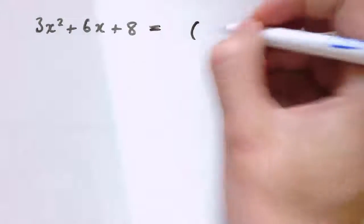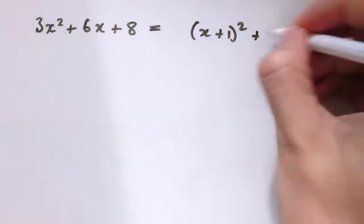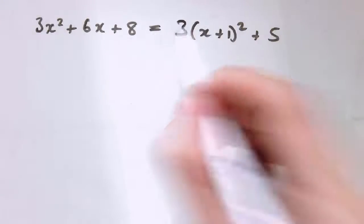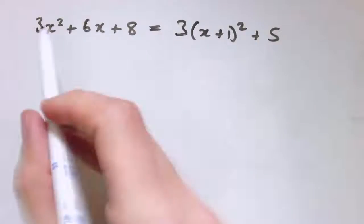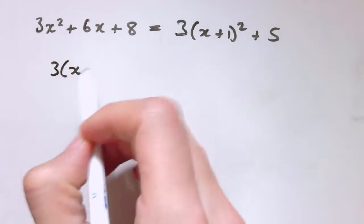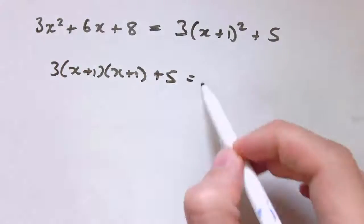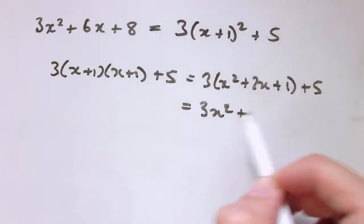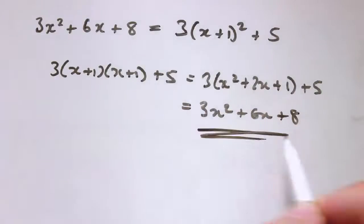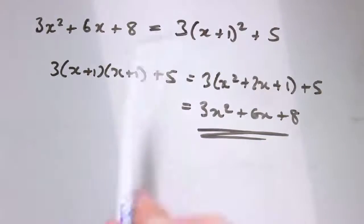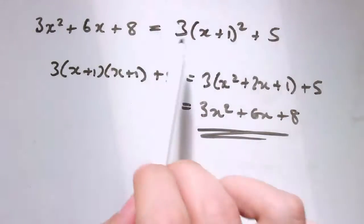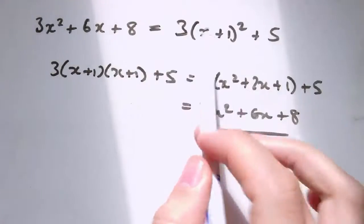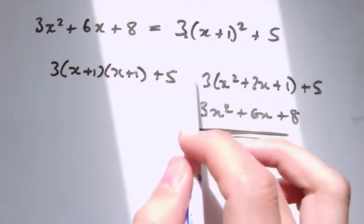Before we had something like x plus 1 squared plus 5. Now the only difference is I'm going to allow a number in front — this still has to be just x plus something squared, but I'm going to be allowed to put a 3 in front. This is in fact the completed square form: multiplying out the right hand side gives 3 times x plus 1 times x plus 1 plus 5, which is 3x squared plus 6x plus 3 plus 5, giving 8. The key point is that this number 3 is the coefficient of x squared, because multiplying out x plus something squared always gives just 1x squared.